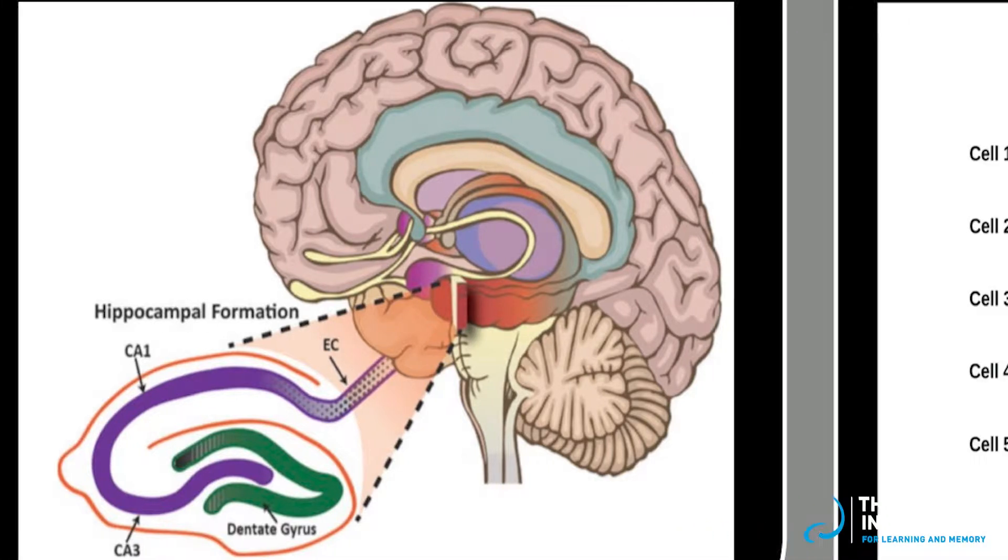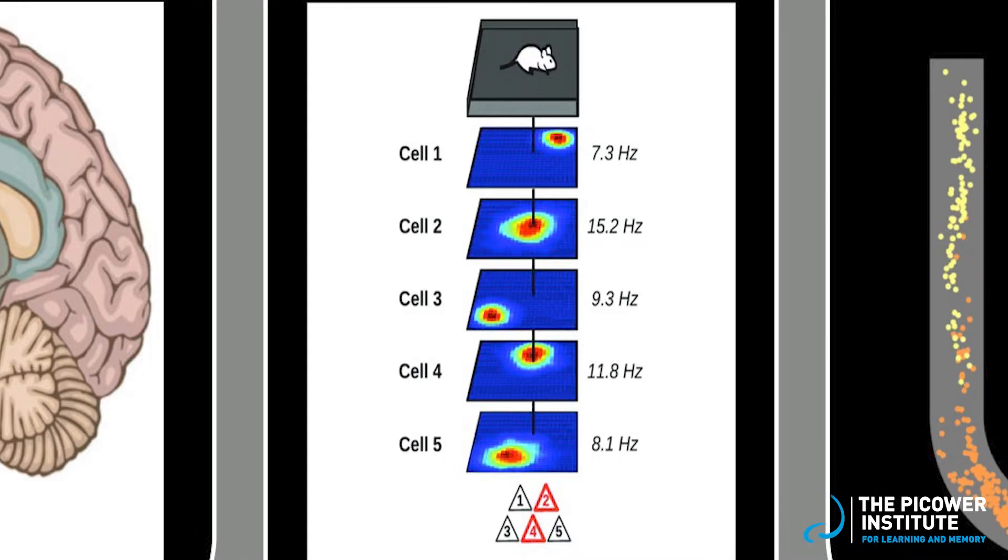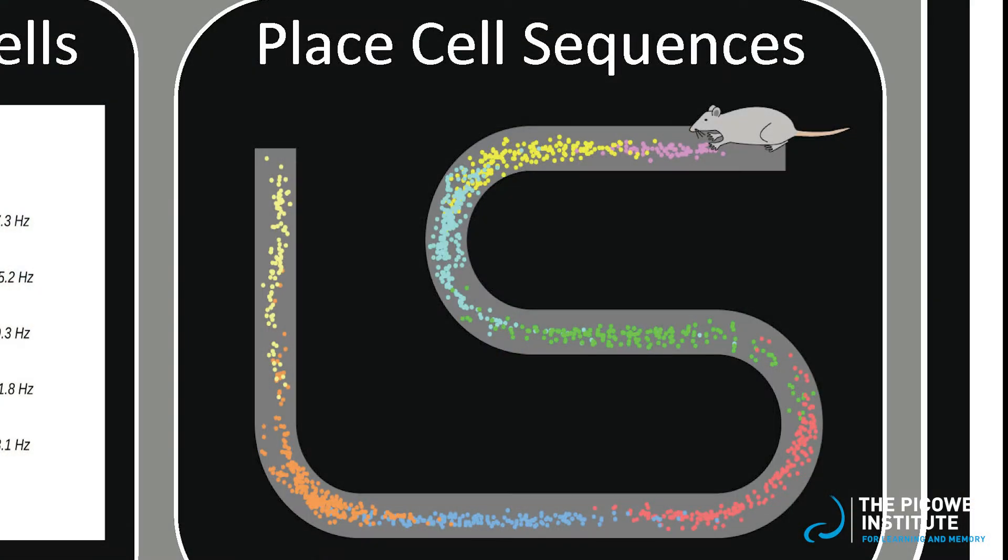The hippocampus contains neurons called place cells. Each place cell tends to become active in a specific location. For example, the central figure here depicts a rat exploring a rectangular arena. Five place cells are shown and each place cell fires at a different location in the arena. Thus, an ensemble of place cells will fire in sequence when a rat runs along a path, as shown in the figure on the right. Each color here represents a different place cell.